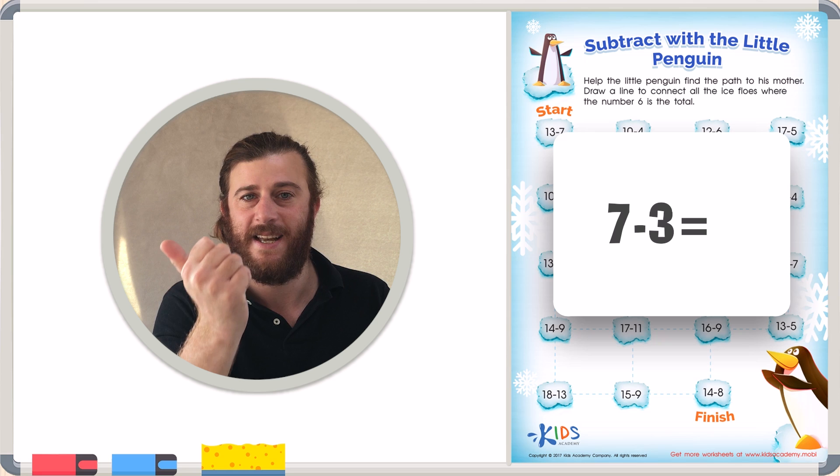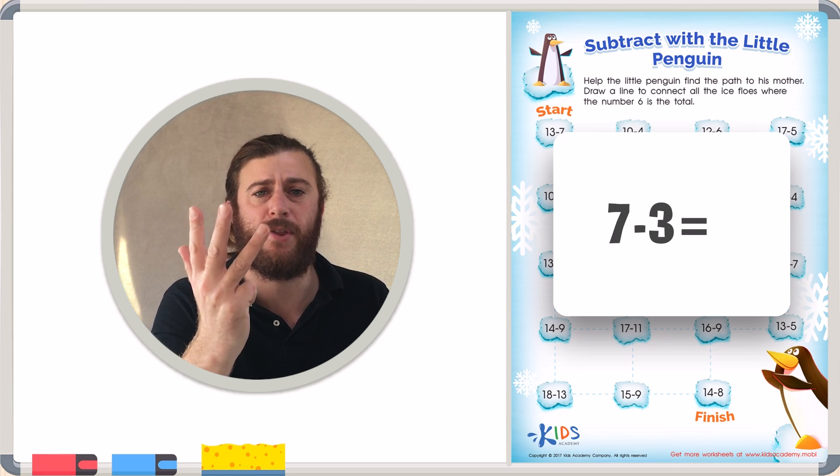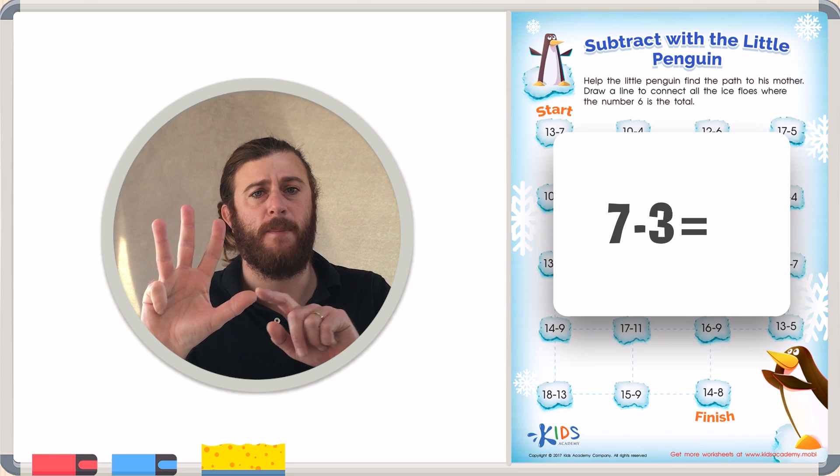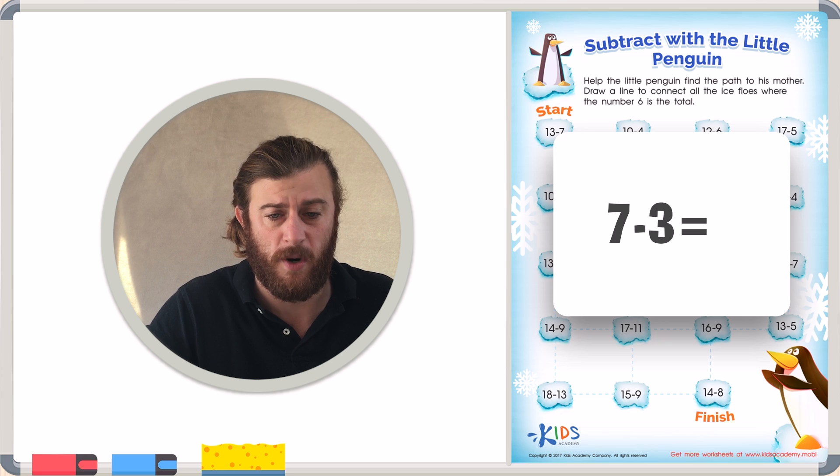7, 6, 5, 4, 3. Okay, I landed on my number 3. How many fingers am I holding up? 1, 2, 3, 4. So 7 minus 3 equals 4.